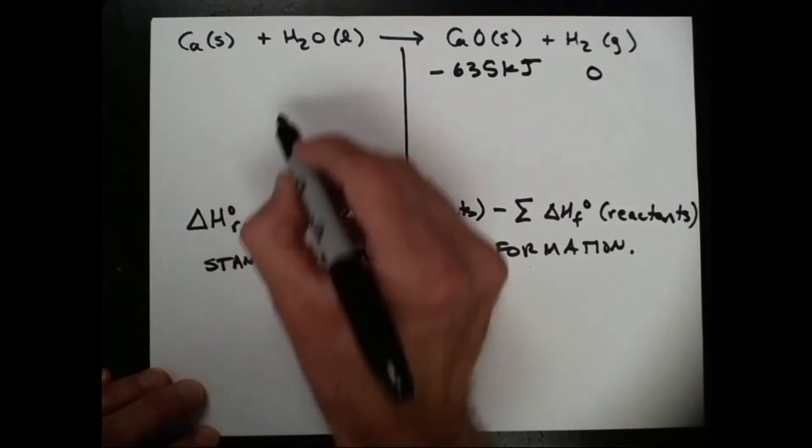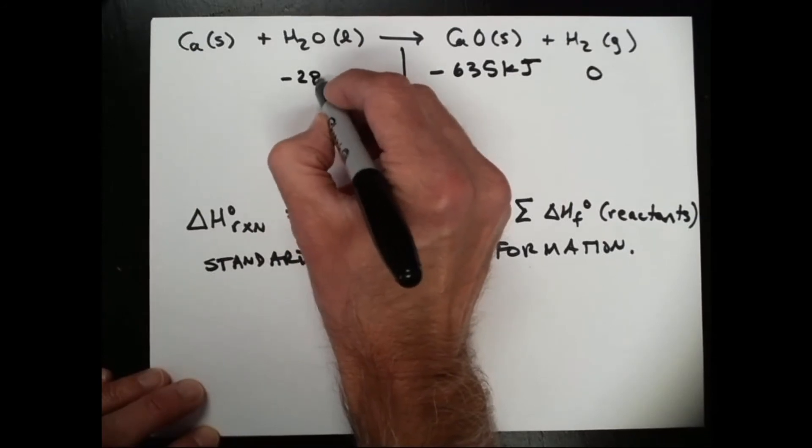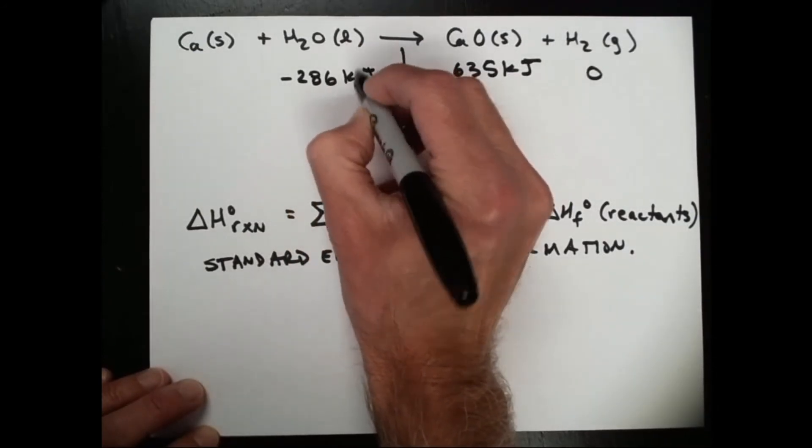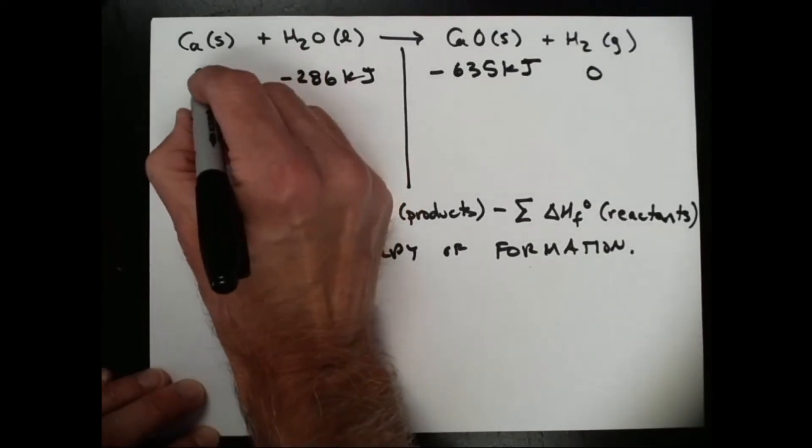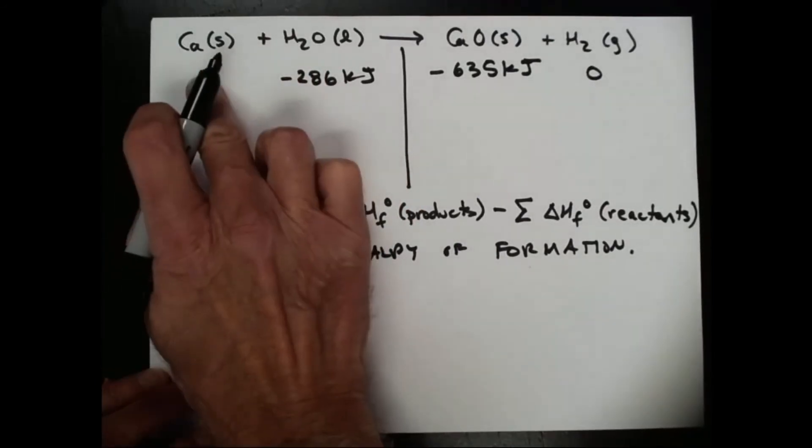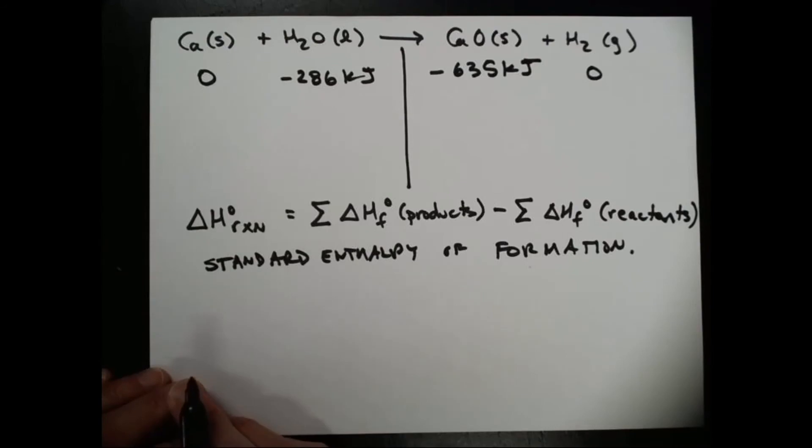Over here, if we look up the standard enthalpy of formation of water, we find that's a negative 286 kilojoules for every mole of water that's produced, and calcium in its standard state is solid calcium, and so we're going to enter a zero here.